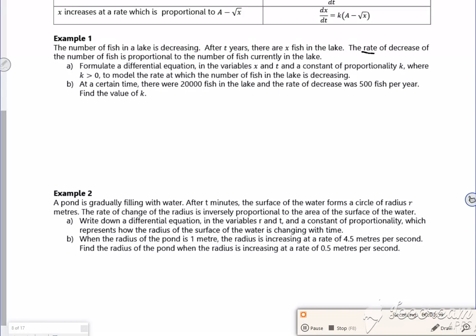So what we have here, the rate of decrease of fish. That's like dx/dt. It's proportional to the number of fish. Now it's the decrease, so I should put a minus there, just have an x there for the fish.